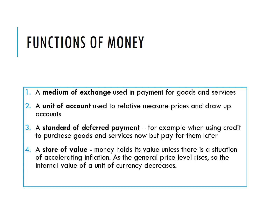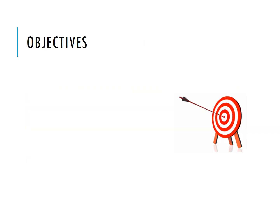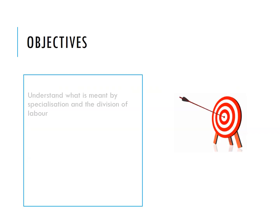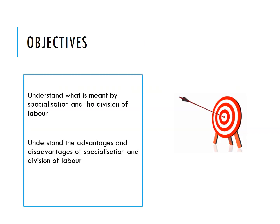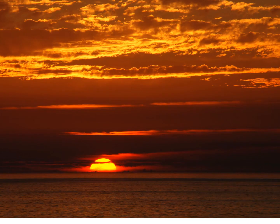So in this video we've looked at specialization and division of labor, the advantages and disadvantages of that approach, and then lastly the function of money in a specialized economy. Well done — that's the end of the video.